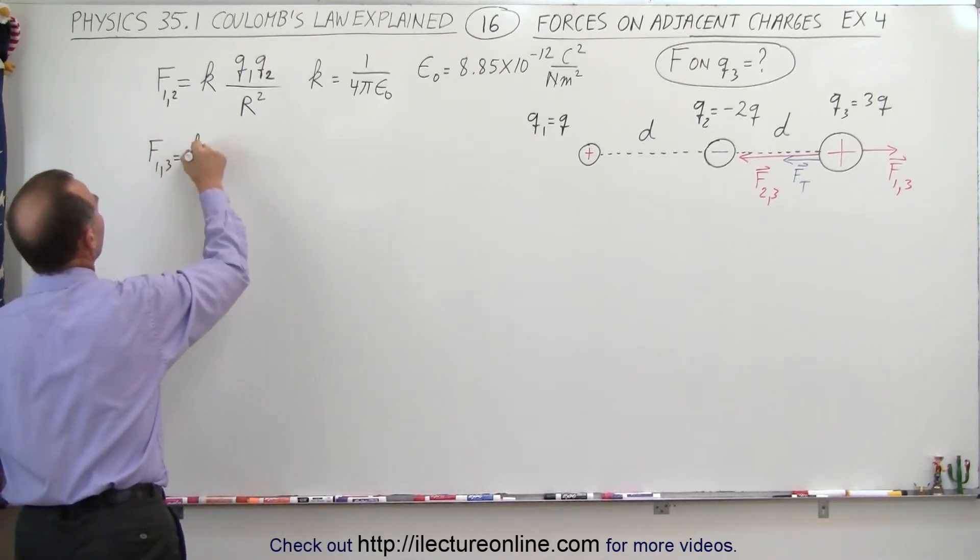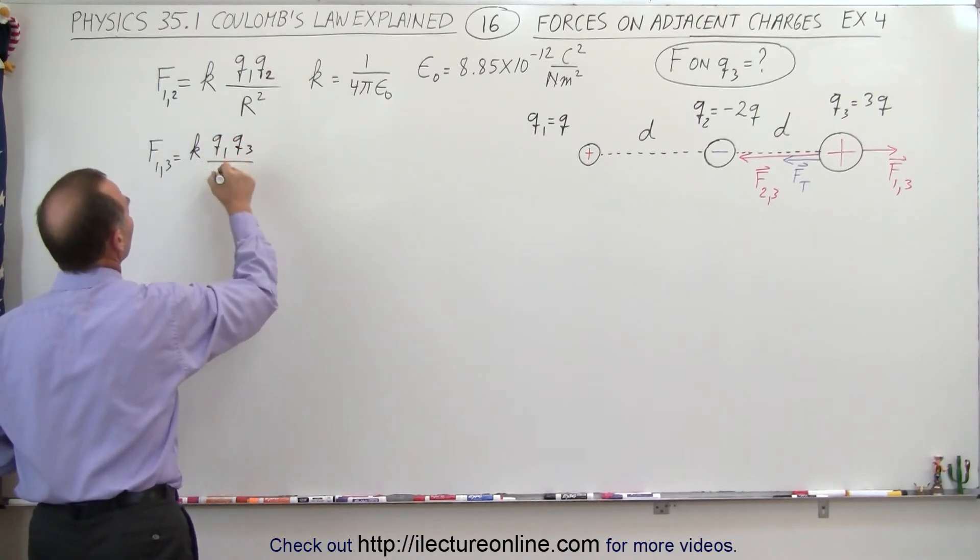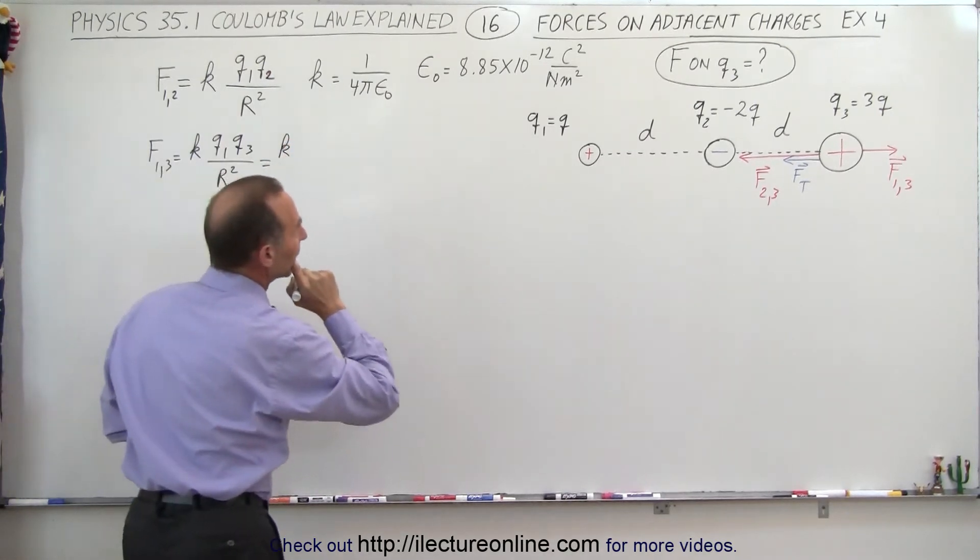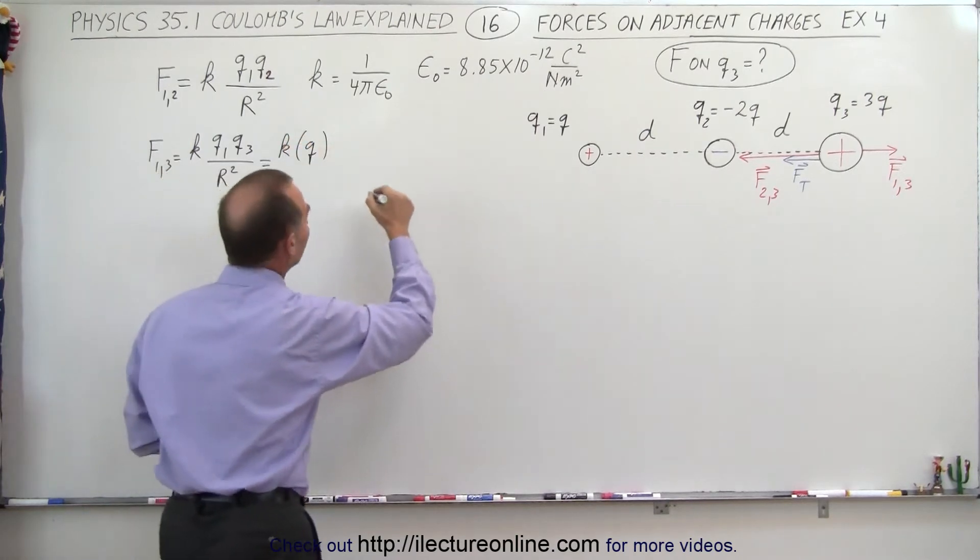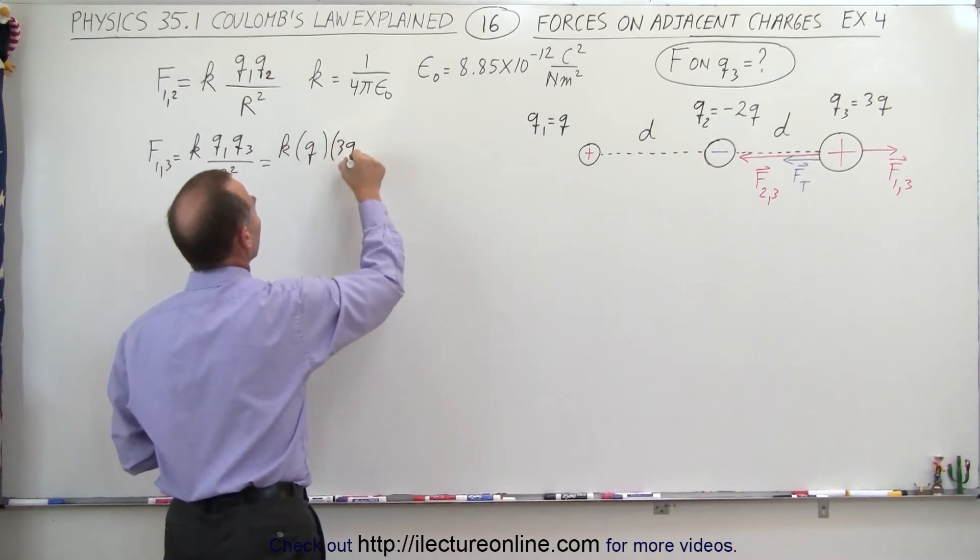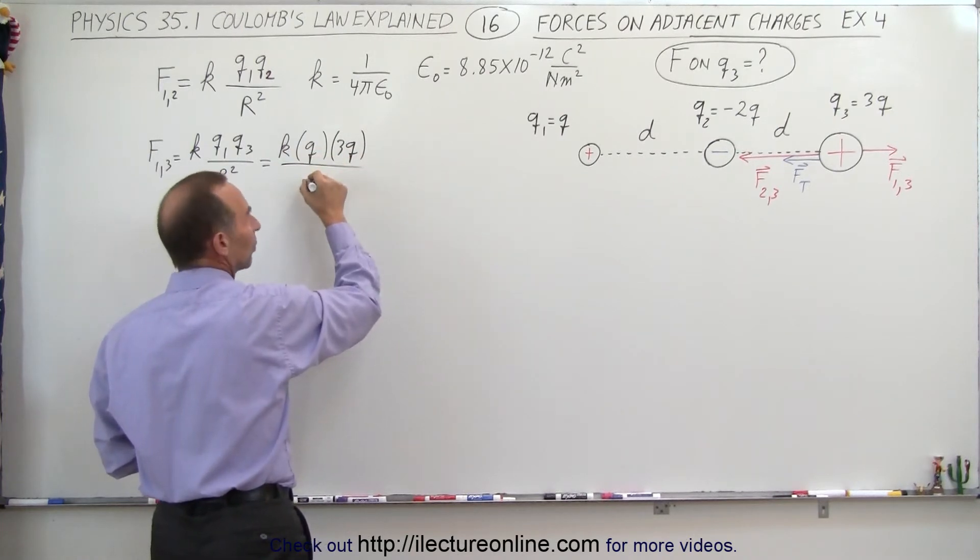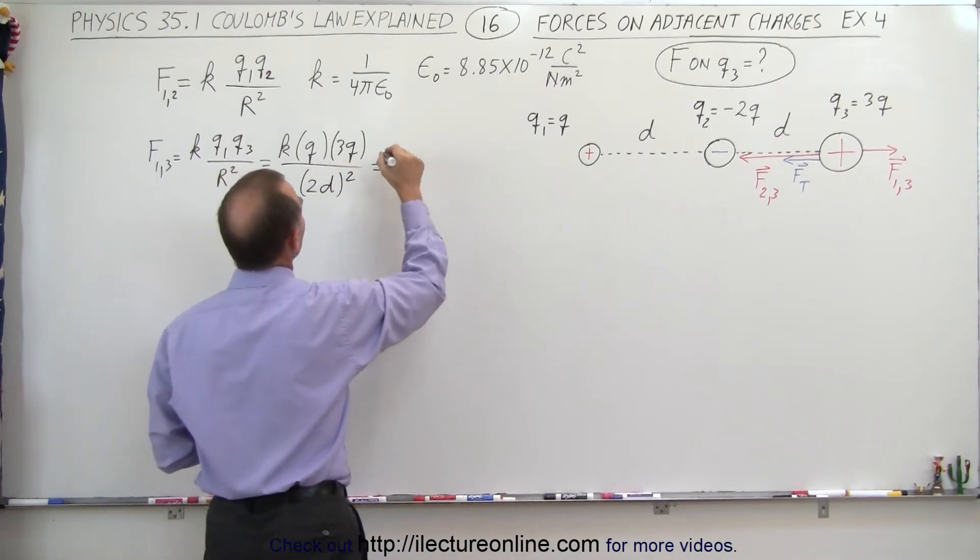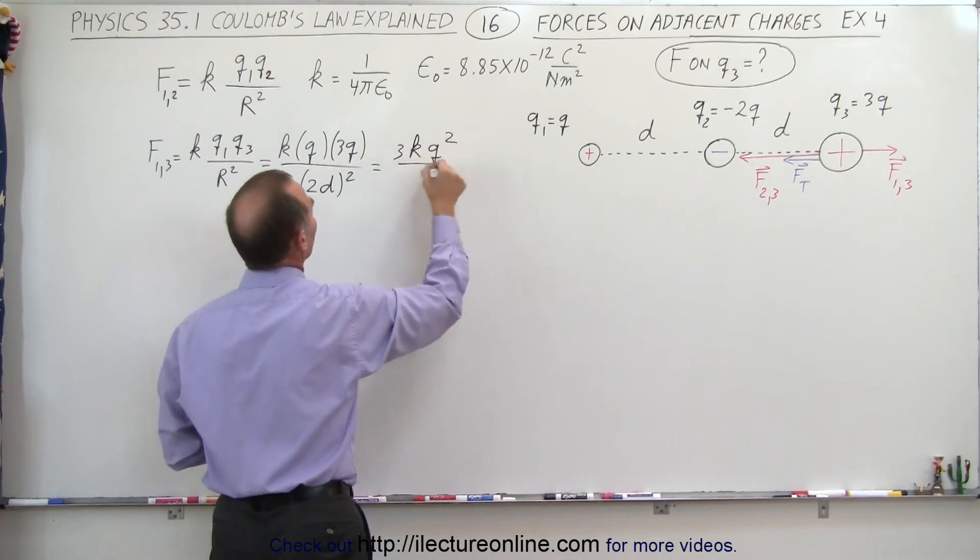That would be equal to K times Q1, Q3 divided by the distance between them squared. So in this case that's equal to K, Q1, well that's equal to Q, and Q3, well that's equal to 3Q. And the distance between them is, let's see here, that's 2D, we have to square that, so the magnitude of that would be 3KQ² divided by 4D².